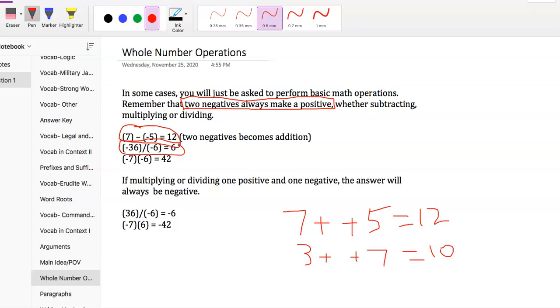When we have a negative in the numerator, the top part of the fraction, and in the denominator, the bottom part, that means the answer is going to be positive. 36 divided by 6 is 6, and negative 36 divided by negative 6 is also 6.